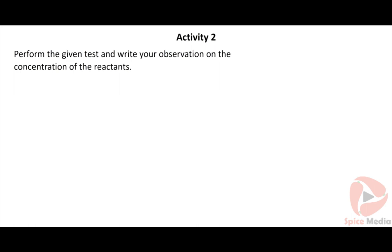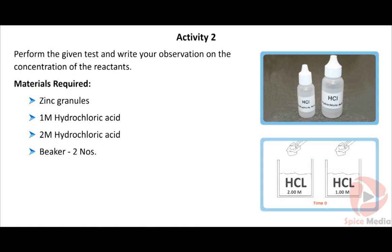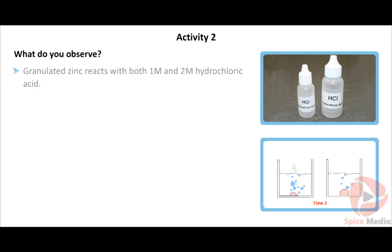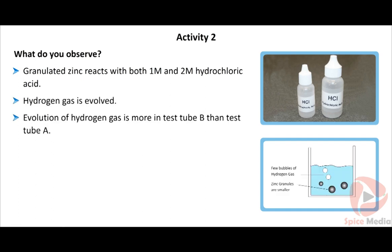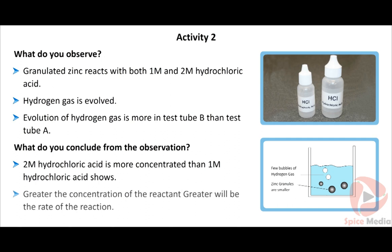Activity 2: Perform the given test and write your observation on the concentration of the reactants. Materials required: zinc granules, 1M hydrochloric acid, 2M hydrochloric acid, two beakers. Procedure: Take 3g of granulated zinc in beakers A and B. Add 5ml of 1M hydrochloric acid to beaker A and 5ml of 2M hydrochloric acid to beaker B. Observe the changes. Granulated zinc reacts with both concentrations and hydrogen gas is evolved. Evolution of hydrogen gas is more in beaker B. Conclusion: 2M hydrochloric acid is more concentrated, showing that greater the concentration of the reactant, greater will be the reaction rate.